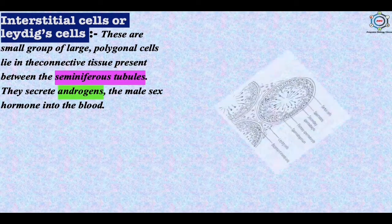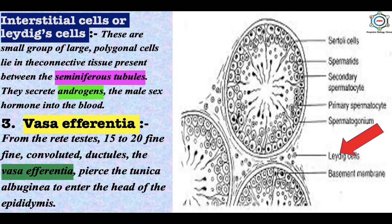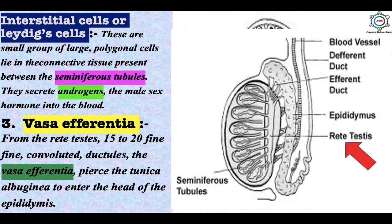The interstitial cells or Leydig cells are small groups of large polygonal cells lying in the connective tissue between the seminiferous tubules. They secrete androgens — the male sex hormone — into the blood. The third part of the male reproductive system is the vasa efferentia. From the rete testis, 15 to 20 fine convoluted ductules — the vasa efferentia — pierce the tunica albuginea to enter the head of the epididymis, and they bear cilia to aid in sperm transport.